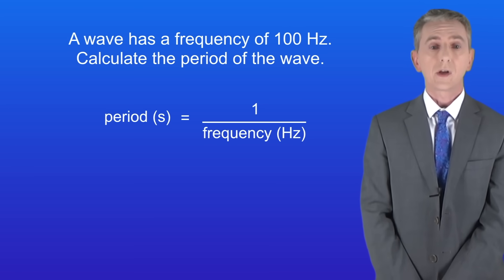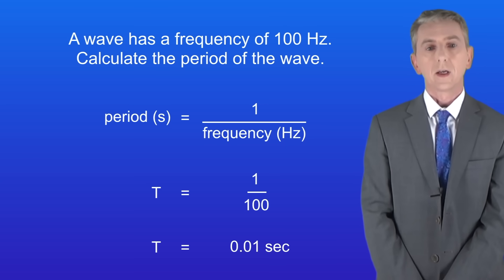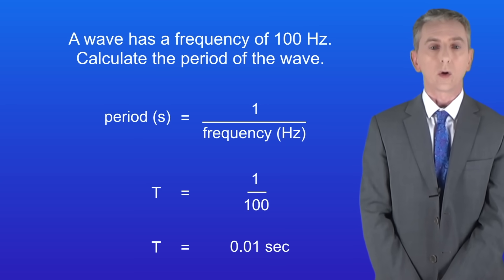Okay, so the period is one divided by the frequency. The frequency is 100 hertz. Dividing one by 100 gives us a period of 0.01 seconds.